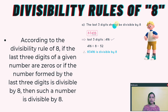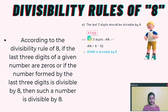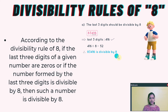Now, divisibility rules of 8. According to the divisibility rule of 8, if the last 3 digits of a given number are 0s, or if the number formed by the last 3 digits is divisible by 8, then such a number is divisible by 8. Let's take an example: 83,416. The last 3 digits are 416, and 416 is divisible by 8 because 52 is the quotient. So 83,416 is divisible by 8.